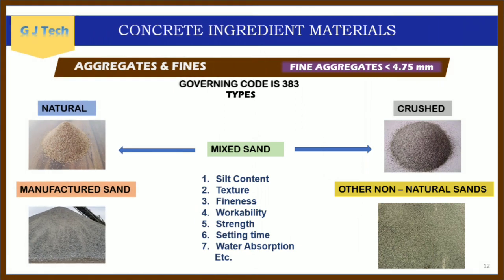To differentiate fine aggregates, certain parameters are used: silt content, texture of particles, fineness modulus, workability, strength of the sand, setting time of concrete when mixed with cement, and water absorption properties. These are the basic factors based on which we can identify and bifurcate between different types of fine aggregates.